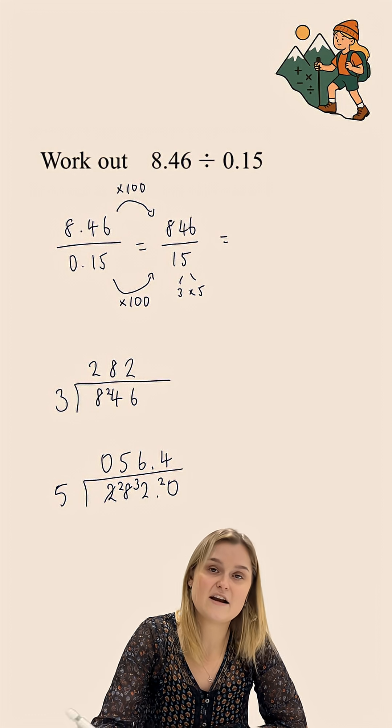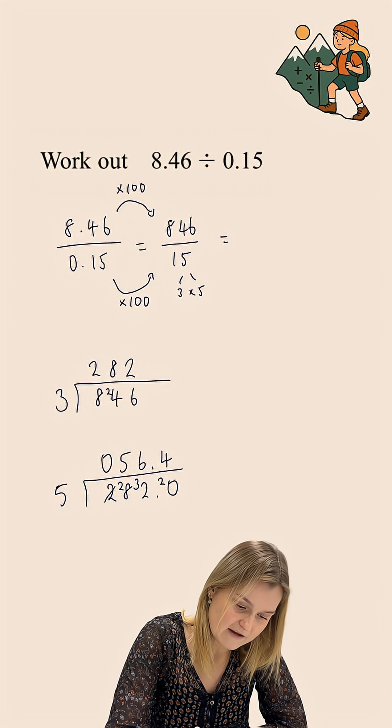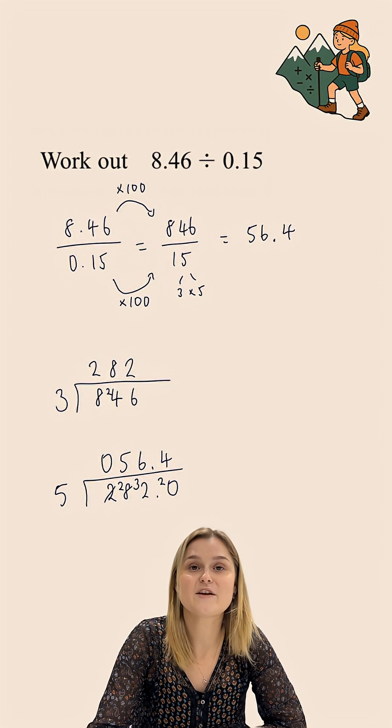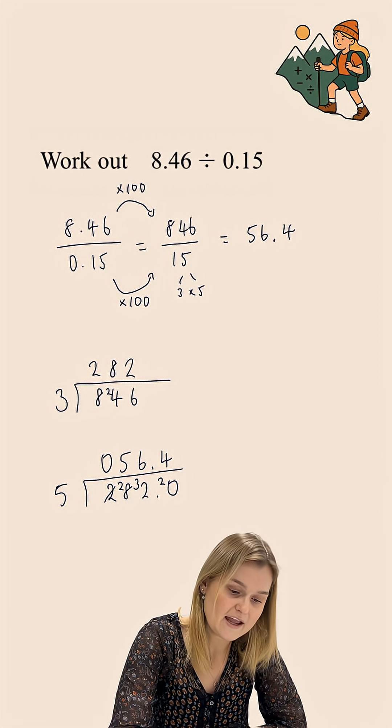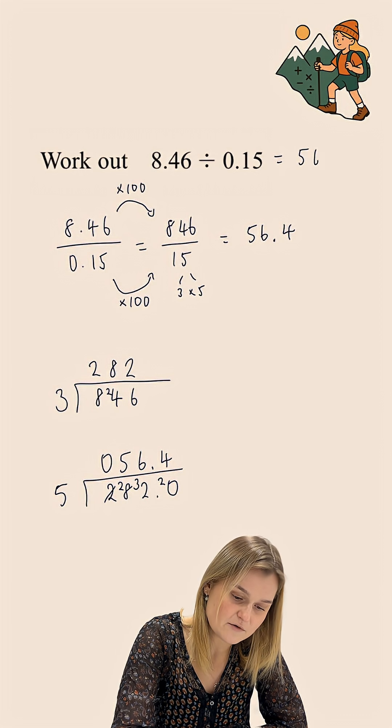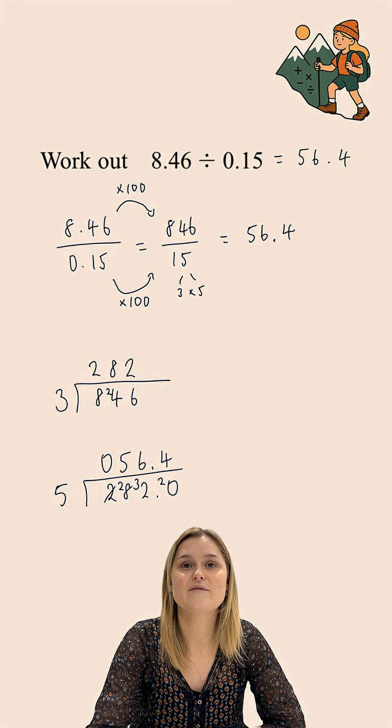Because we had an equivalent fraction at the beginning, we know that if one of these calculations is equal to 56.4, so is the other one. And so 8.46 divided by 0.15 is equal to 56.4.